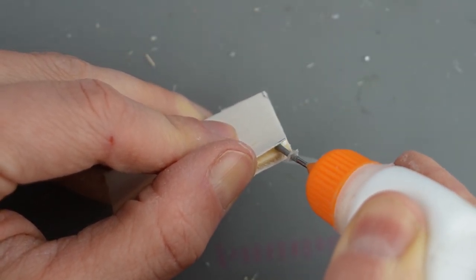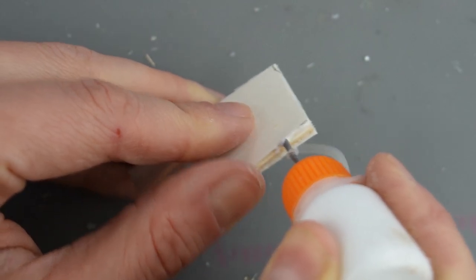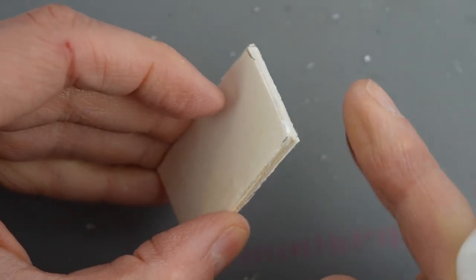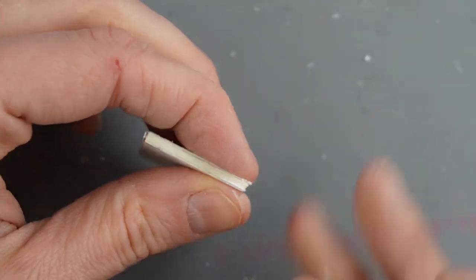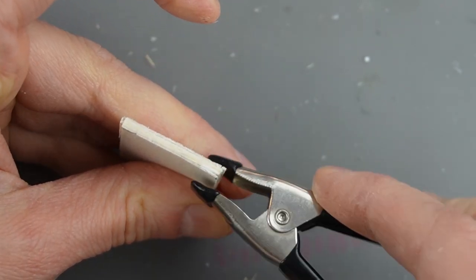I'm using some glue to reattach the veneer that's coming off. I'm using a cheap clip from the Dollar Tree to hold it while the glue sets, but you can also use tape.